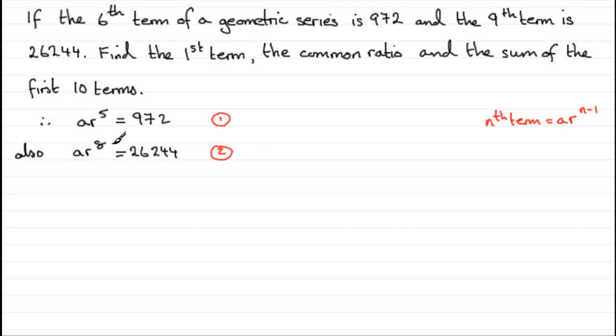Now to solve simultaneous equations like this in geometric series type questions, what I would suggest you do is take the bigger of the two equations, the one with the biggest power, and divide it by the smaller one. In other words, do equation 2 divided by equation 1.